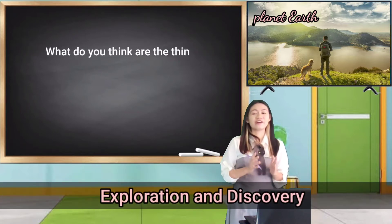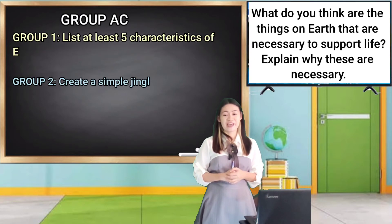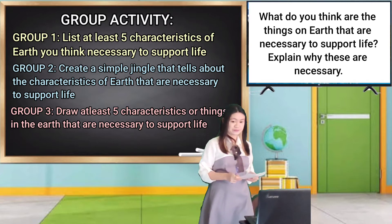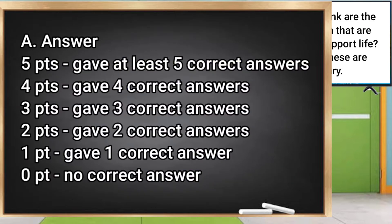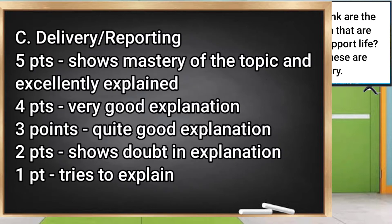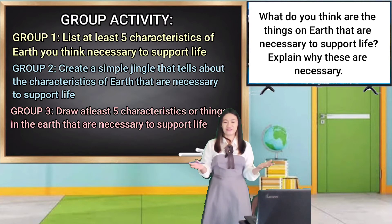Okay, very good. What do you think are the things on Earth that are necessary to support life? I want you to explain why these are necessary. You will answer my question through group activity. I have here a card which contains instructions for each group. For group 1, list at least 5 characteristics of Earth you think are necessary to support life. For group 2, create a simple jingle that tells about the characteristics of Earth that are necessary to support life. And for group 3, draw at least 5 characteristics or things in the Earth that are necessary to support life. This will be the criteria for rating the activity. Each group will present your work in front with the assigned reporter. The group with the highest points will receive a token after we evaluate your activity.